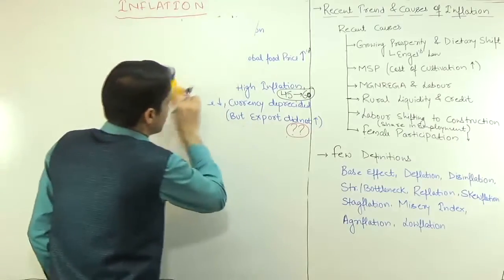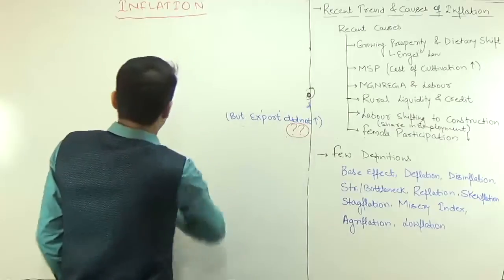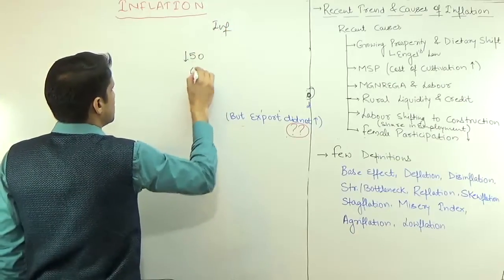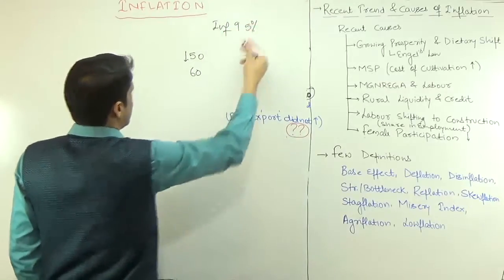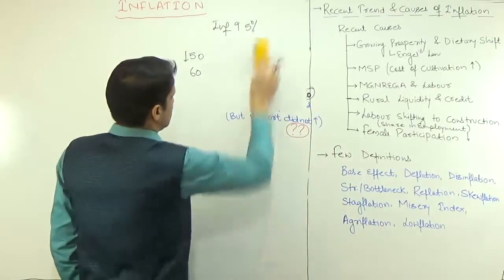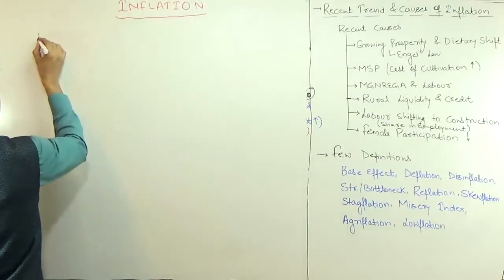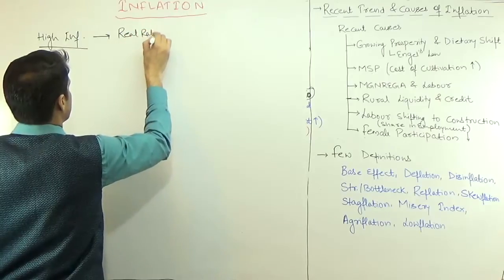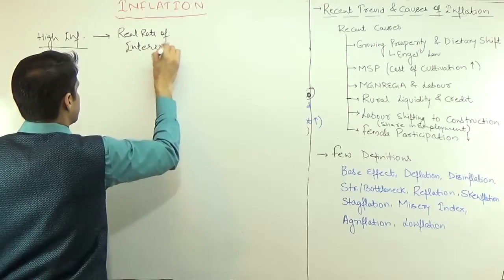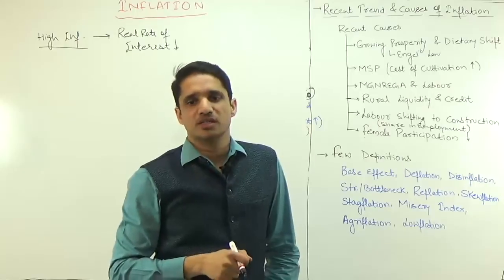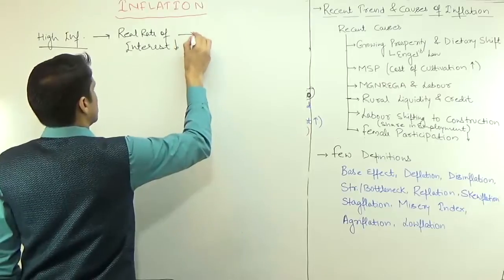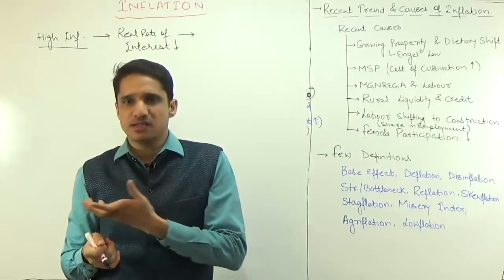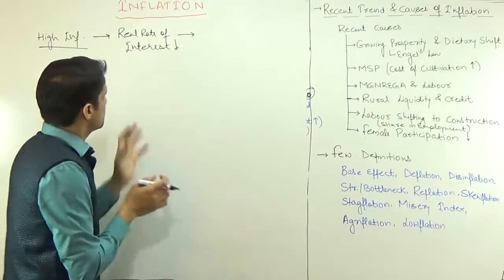The main reason exports didn't increase is inflation. The real rate of interest equals the nominal rate of interest minus the rate of inflation. When inflation is high, the real rate of interest decreases. So whoever wants to invest will look for other alternatives — gold, land, share market — rather than accepting the four to eight percent offered by bank FDs.